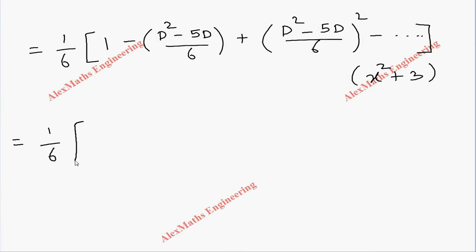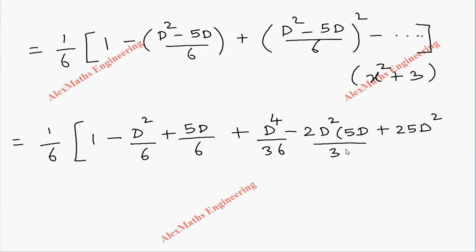Now we are going to expand: 1/6[1 - D²/6 + 5D/6 + (D² - 5D)²/36]. Coming to the next term it is of the form (a - b)², so a² - 2ab plus b². This becomes D⁴/36 - (2·D²·5D)/36 + 25D²/36.